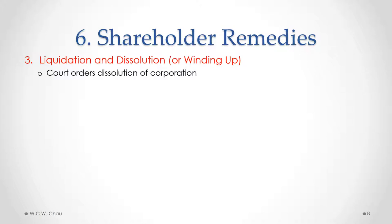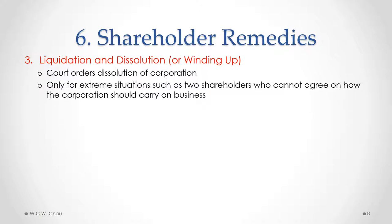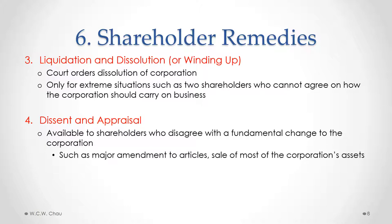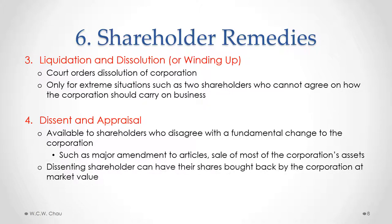Another remedy available to a shareholder is liquidation, dissolution, or winding up the corporation. This involves a court ordering the dissolution of the corporation. Because it essentially eliminates the corporation, this is only available in extreme situations, such as where two shareholders cannot in any way agree on how the corporation should carry on its business. The fourth available shareholder remedy is called dissent and appraisal. This remedy is available to shareholders who disagree with a fundamental change to a corporation, such as a major amendment to the articles or a sale of most of the corporation's assets. The dissenting shareholder can ask to have their shares bought back by the corporation at their market value.